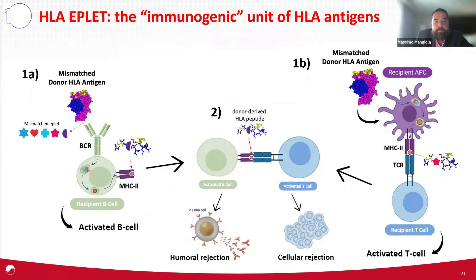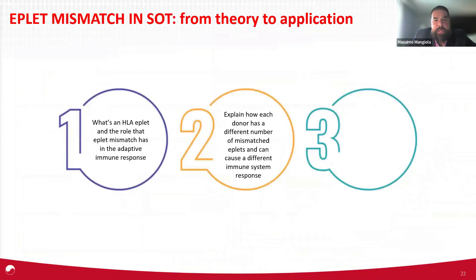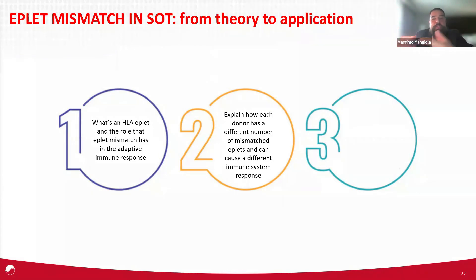So this is the first step: what is an eplet, what eplets cause, and I've shown you the mechanism. Step number two in this process of digesting eplet mismatch in solid organ transplantation is to show that each donor brings a different array of eplet mismatch, so a patient can be differently mismatched to multiple donors. Different donors, because they bring different eplet mismatches, can cause a different immune response.